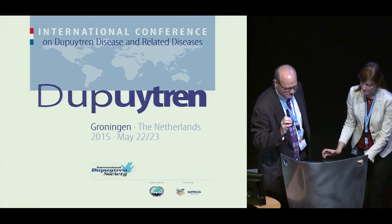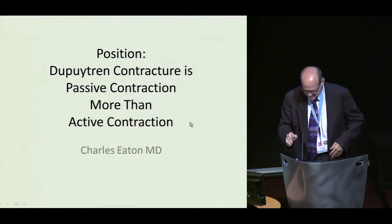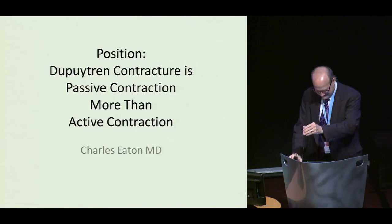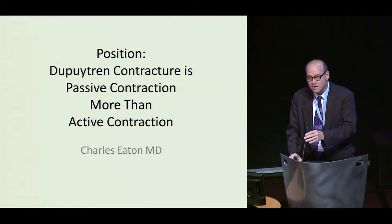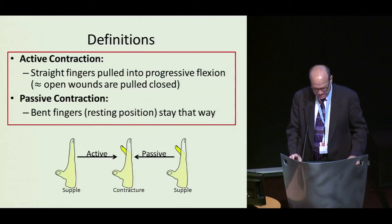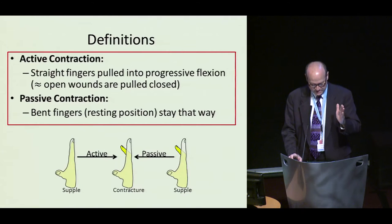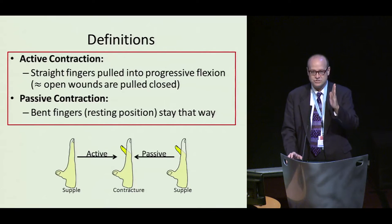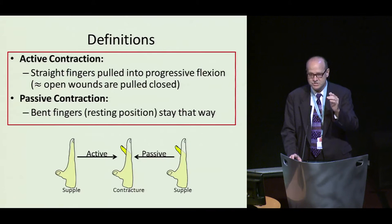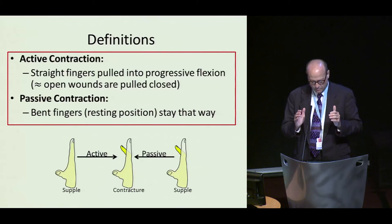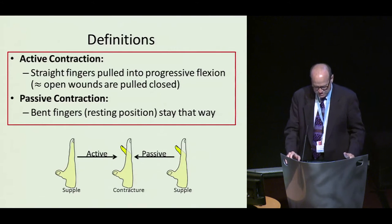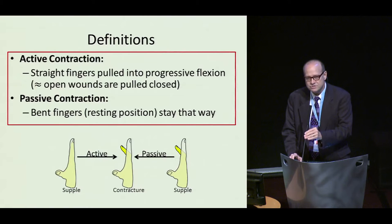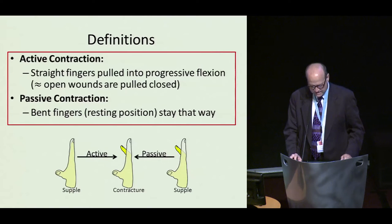I think we're just really saying using different words to explain the same thing, except that you're wrong. My position is that Dupuytren contracture is a passive process more than an active contractile process. Active contraction takes a finger which is straight and pulls it bent, whereas passive contraction is the process by which bent fingers have their tissues remodeled so that the fingers stay that way.